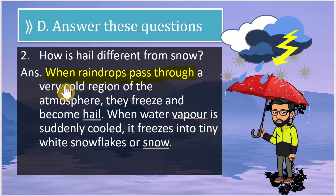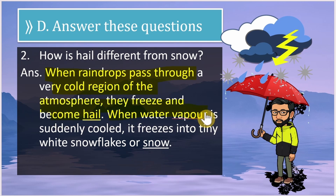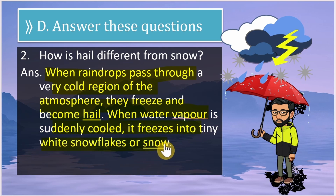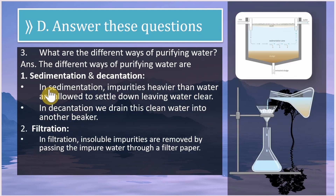Question 2: How is hail different from snow? When raindrops pass through very cold regions of the atmosphere, they freeze and become hail. When water vapor is suddenly cooled, it freezes into tiny white snowflakes — that is snow.